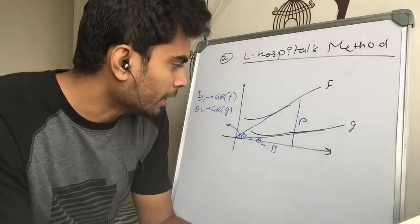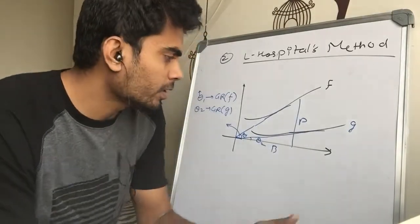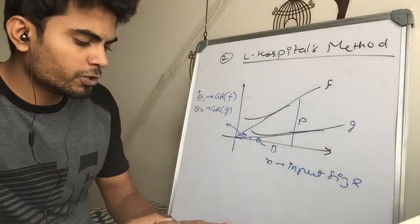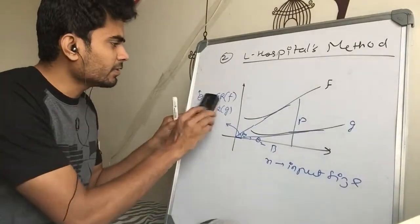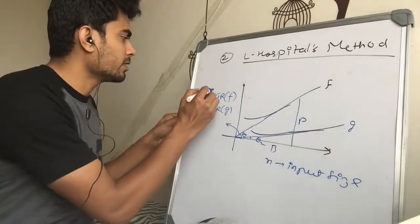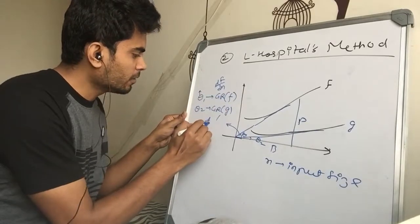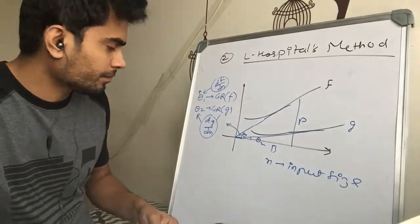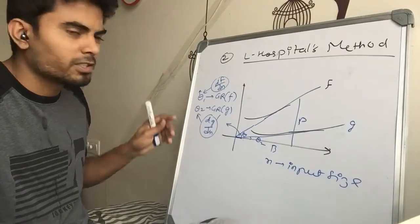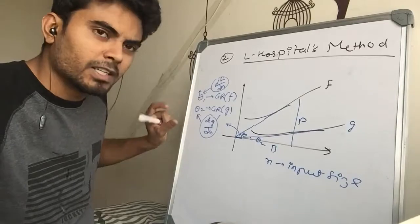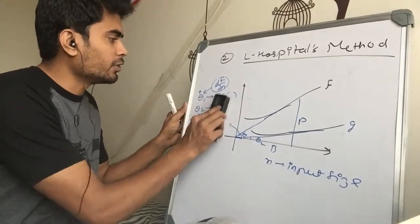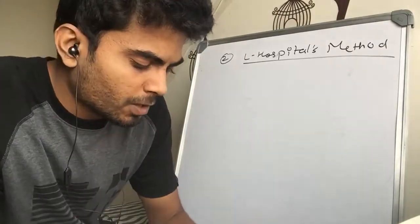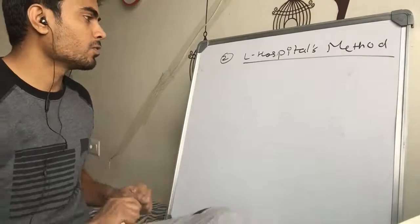These angles are nothing but the differential, because how do you find the growth rate of any function? You just differentiate it with respect to the variable — here the variable is input size n. So growth rates are basically df/dn and dg/dn. This indirectly gives you the angle, so we are just ignoring the tangent part since it's directly proportional.